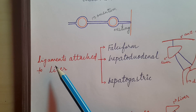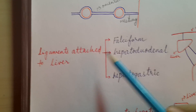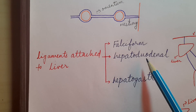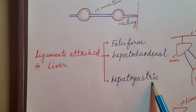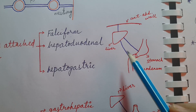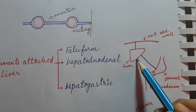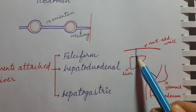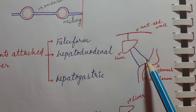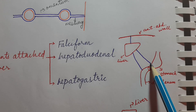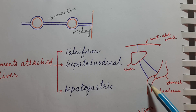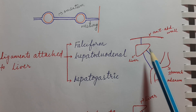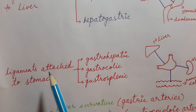Now we will discuss the ligaments attached to the liver. There are three ligaments: first is the falciform ligament, second is the hepatoduodenal ligament, and third is the hepatogastric or gastro-hepatic ligament. The falciform ligament attaches the liver to the anterior abdominal wall, the hepatogastric ligament attaches the liver to the stomach, and the hepatoduodenal ligament attaches the liver to the duodenum.